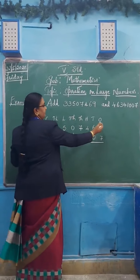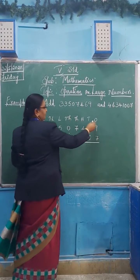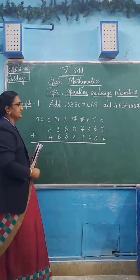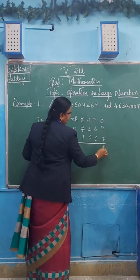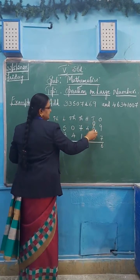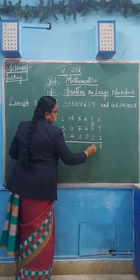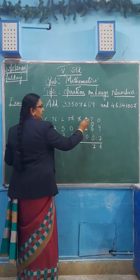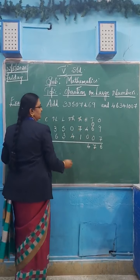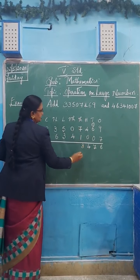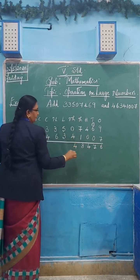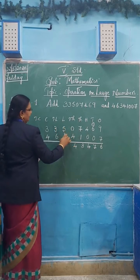Start the addition from the right hand side. The first is the ones place: nine plus seven, that is sixteen. I will write six here and carry one to the tens place. One plus six is seven, seven plus zero is seven — I will write seven here. Next to hundreds place: four plus zero is four. Next to thousands place: seven plus one is eight. Again to ten thousands place: zero plus four is four. Lakhs place: five plus three is eight. Ten lakhs place: three plus six is nine.